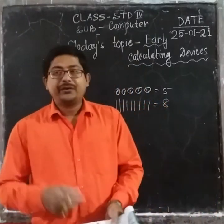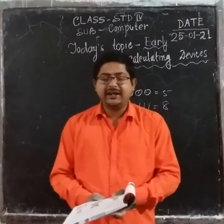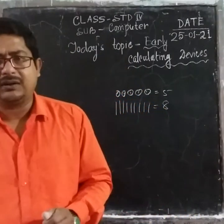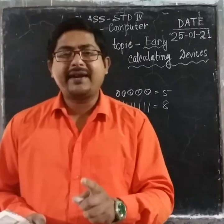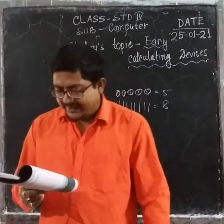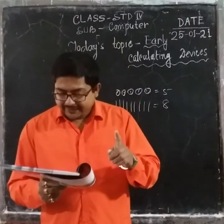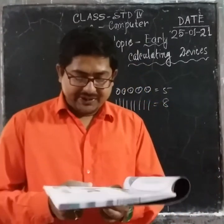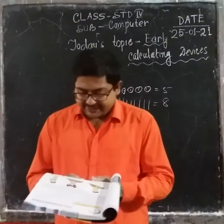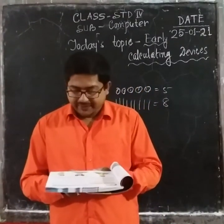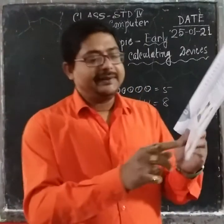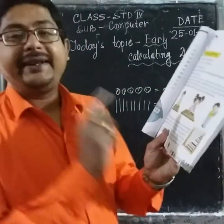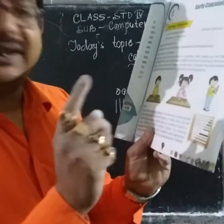So then came the Abacus. Abacus is the first calculating device — remember that. It is a manual aid to calculation that consists of beads or disks that can be moved up and down. This is Abacus, and it is the first calculating device.